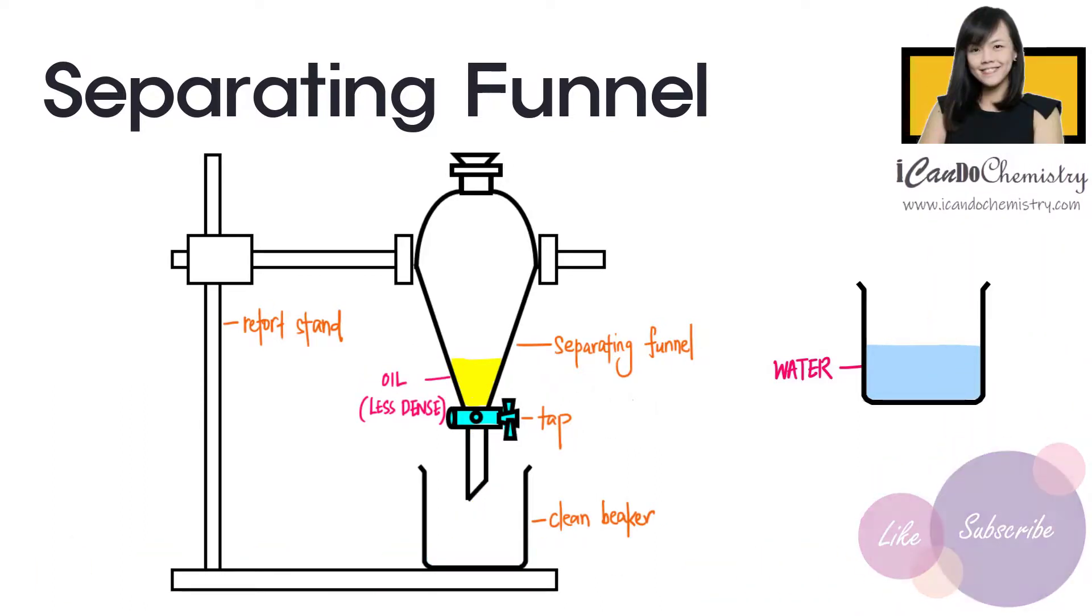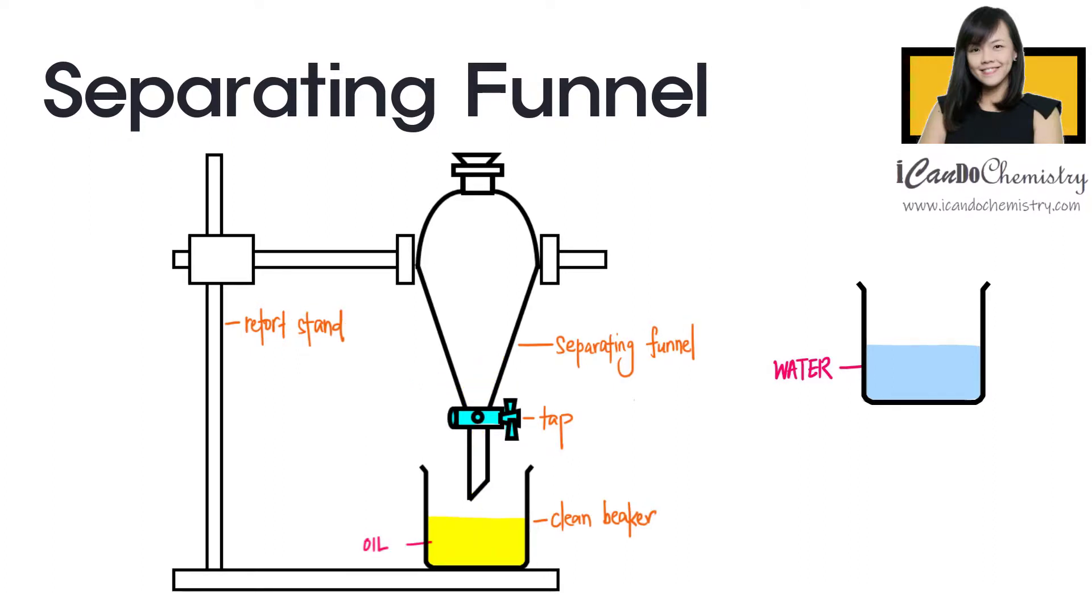Now place another clean beaker below the funnel. Now the funnel contains only oil. We will allow all the liquid to flow out of the funnel and into the beaker. We have successfully separated a mixture of oil and water.